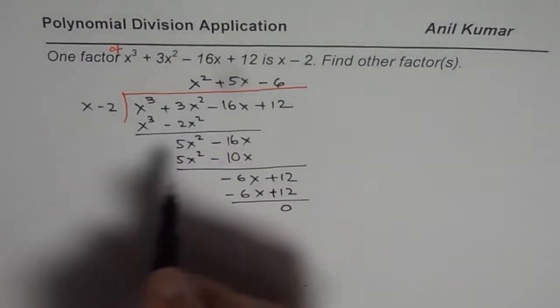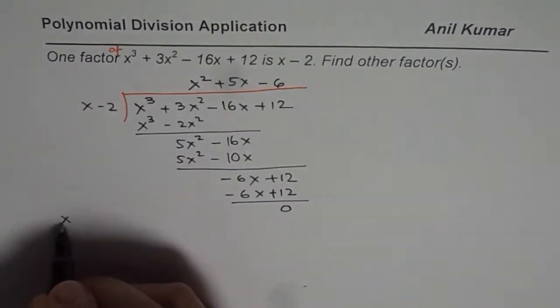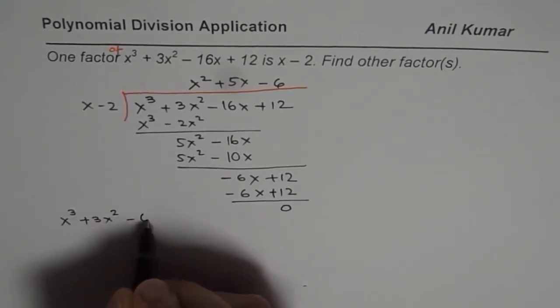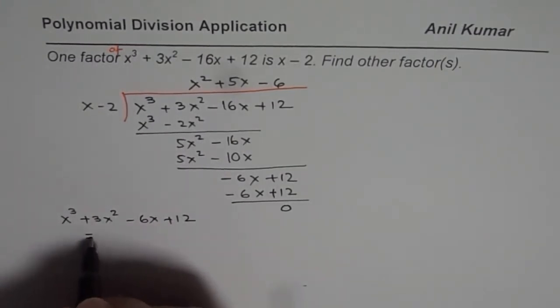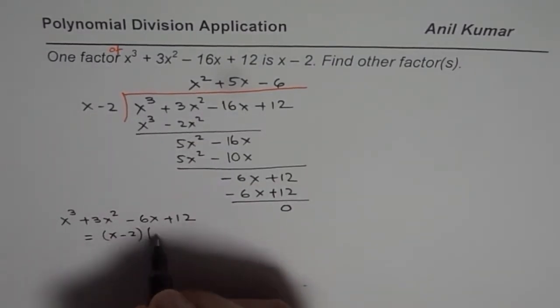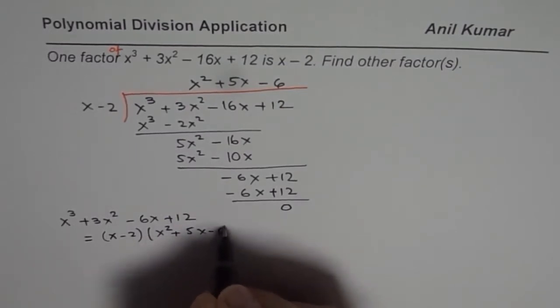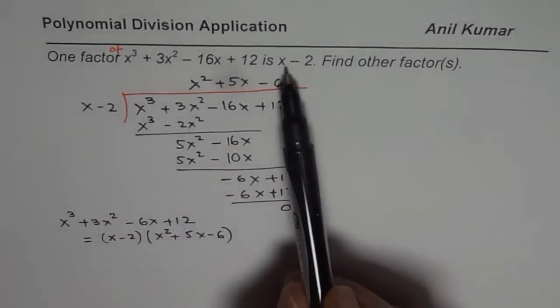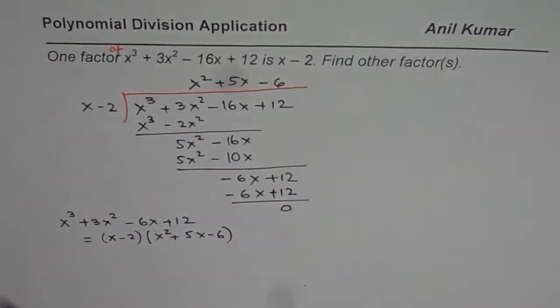we could write this particular function as x³ + 3x² - 6x + 12 as equal to product of these two. That is, x - 2 times x² + 5x - 6. So we have got one additional factor. x - 2 was given to us as a factor, and we have one more factor.